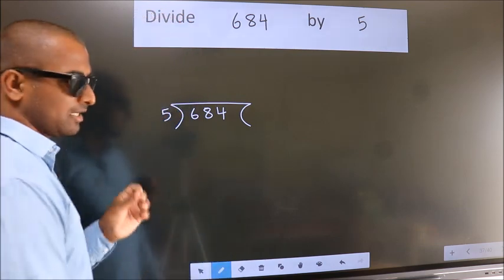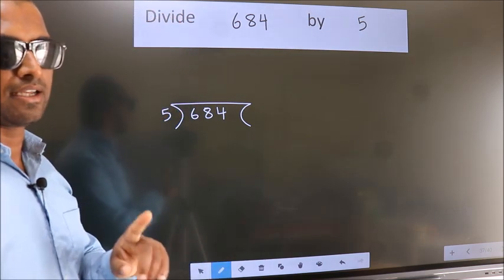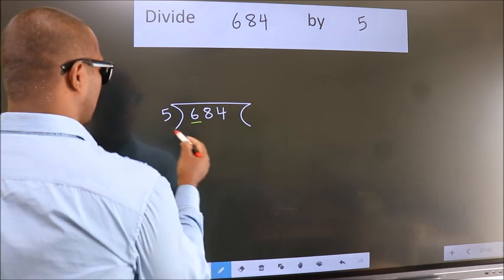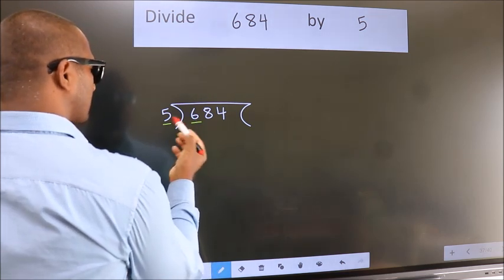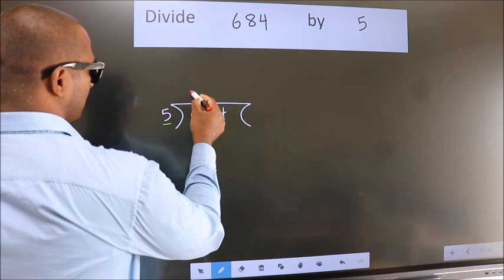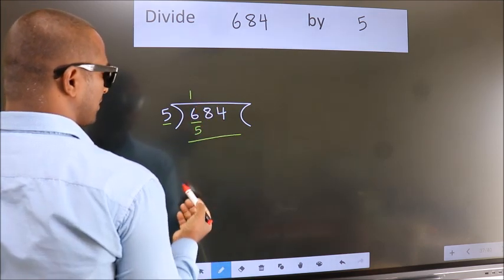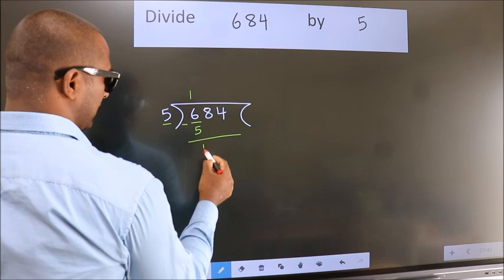This is your step 1. Next, here we have 6, here 5. A number close to 6 in 5 table is 5 once 5. Now we should subtract. We get 1.